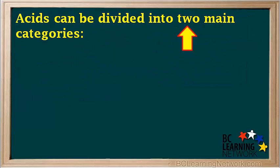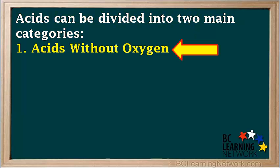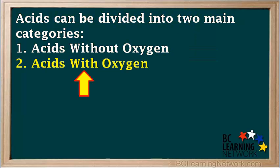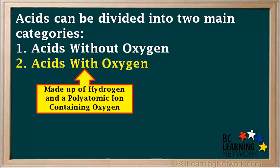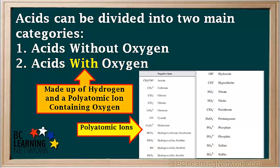Acids can be divided into two main categories: acids without oxygen and acids with oxygen. Some textbooks call these oxy acids. Acids without oxygen are made up of hydrogen and a negative ion without oxygen, and acids with oxygen are made up of hydrogen and a polyatomic ion containing oxygen. A list of polyatomic ions and their names is supplied in the Science 10 data booklet, and you can see that most of these polyatomic ions contain oxygen.